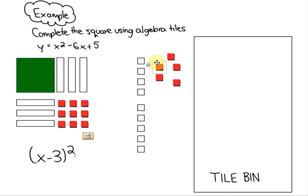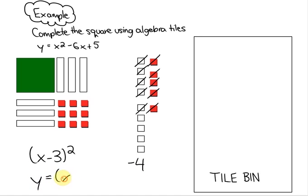But we have all of this extra stuff over here, so we just need to simplify it. In order to do that, we can see that we have a number of zero pairs. In fact, there are a total of 5 zero pairs. When we get rid of those zero pairs, you can see that we're left with negative 4. So this completed square is y equals x minus 3 squared minus 4.